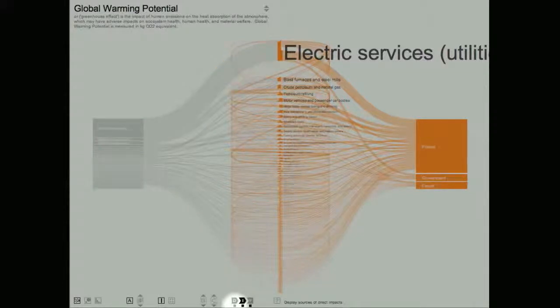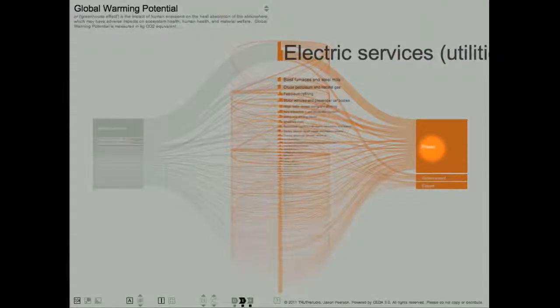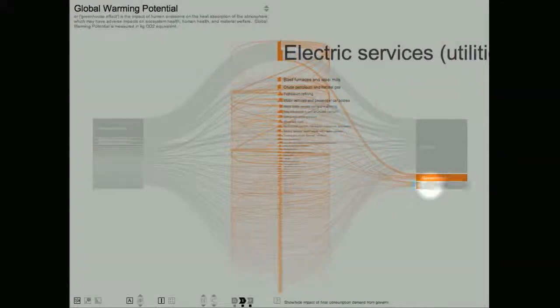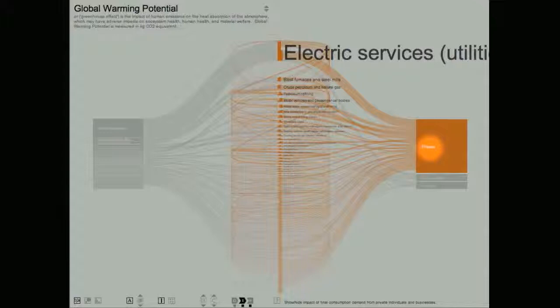I can also turn entire groups of final consumption flows on or off by clicking on the final demand groupings on the right. For example, if I want to show only the final consumption flows related to government consumption, I can click on private and export to turn off those flows. Or I could click on government flows to turn them off and click on private to look at the portion of impacts that are generated in response to private consumption.